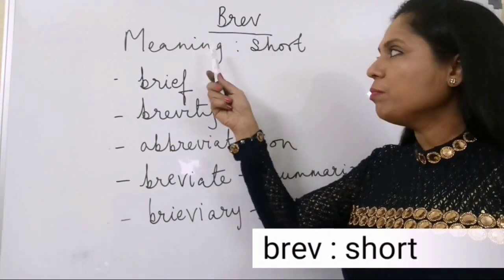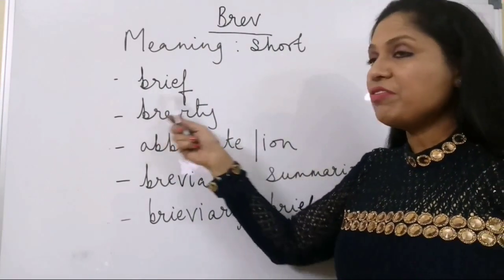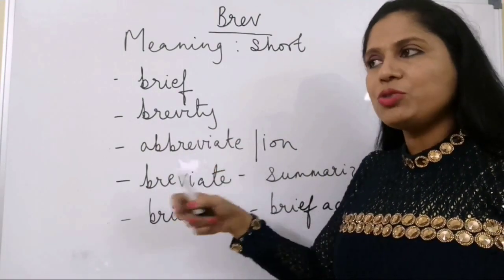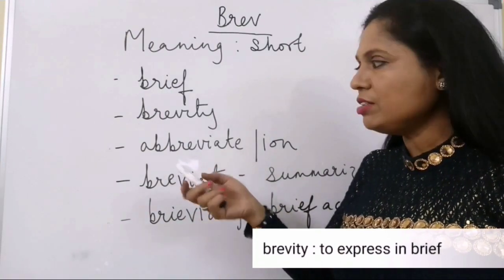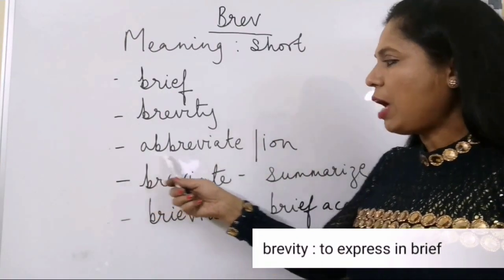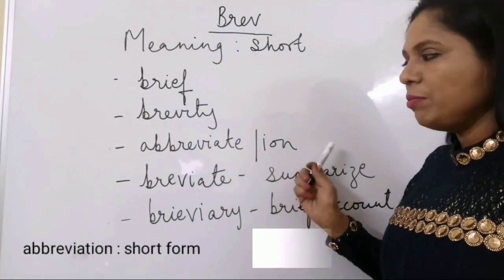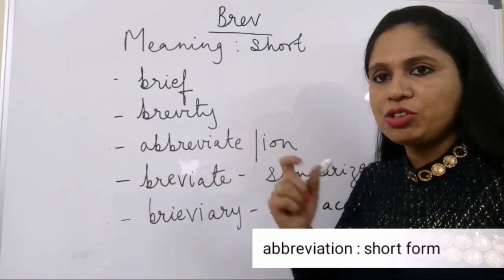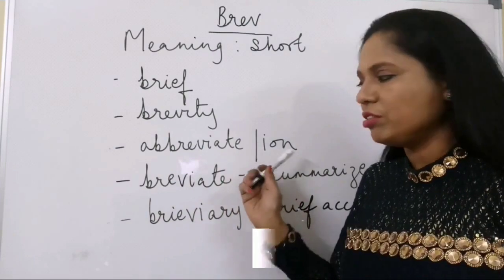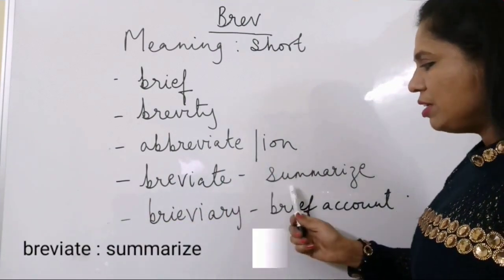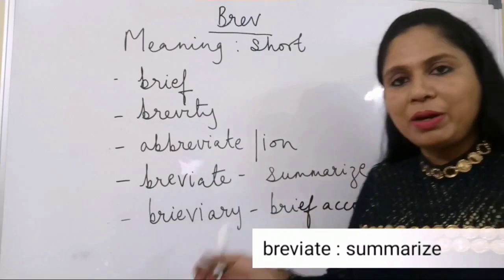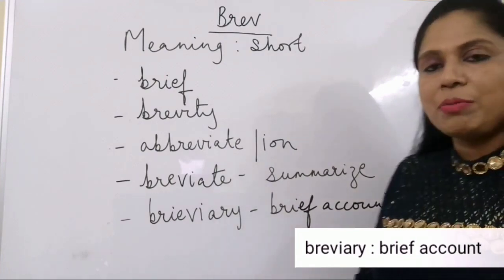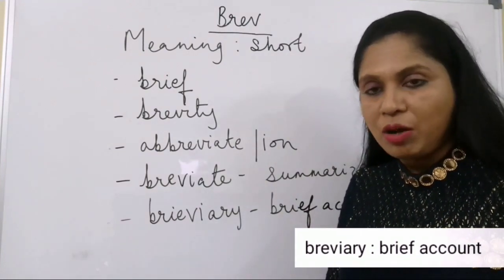The root word breve means short. Brief means in short. Brevity also means to express ideas briefly and concisely. Abbreviate or abbreviation means short forms — for example, UNO is a short form. Breviate means to summarize or to express something in brief. Breviary also means to summarize or give a brief account of something.